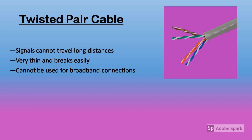Talking about the disadvantages of twisted pair cable: signals cannot travel long distances, usually not more than 100 meters. However, that can be made possible by using repeaters, which are small devices that replicate the same signal with the same strength as it started. Since the copper wires are very thin, they can break easily, and twisted pair cable cannot be used for broadband connections — that is, high-speed internet access.